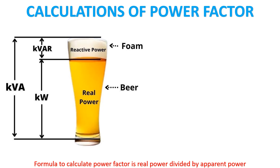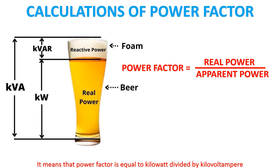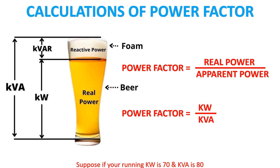The formula to calculate power factor is real power divided by apparent power. It means that power factor is equal to kilowatt divided by kilo volt ampere. Suppose your running kW is 70 and kVA is 80, then your power factor is 0.875.